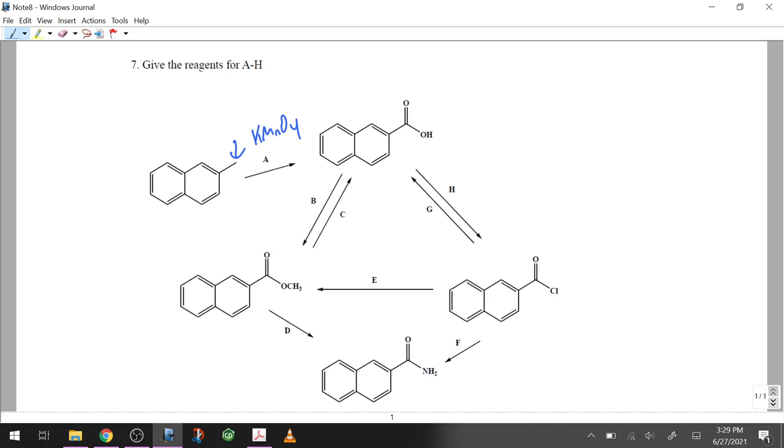Letter B, carboxylic acid to simple ester, that's the Fisher esterification. That's going to be the alcohol - the alcohol is methanol in this case - and sulfuric acid generally, or strong acid.